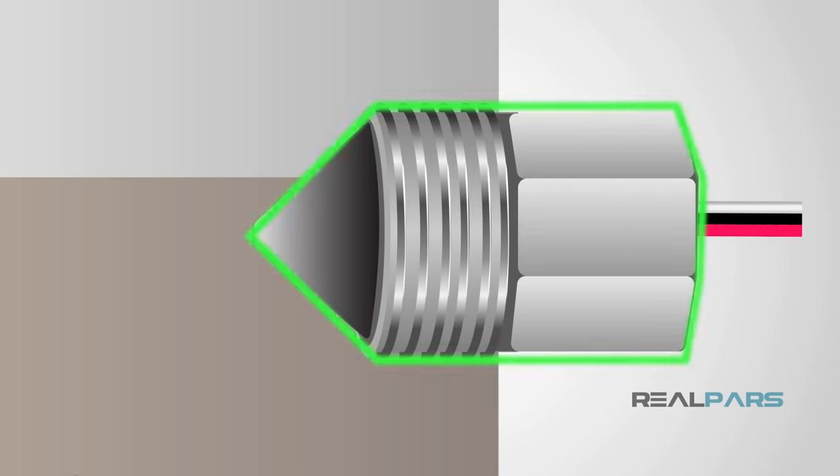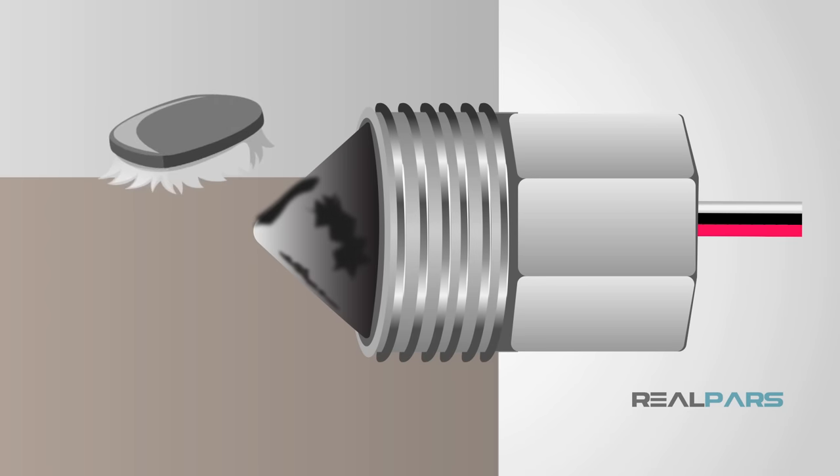These sensors have no moving parts. They are not affected by high pressure or temperature, are small in size, and can be used in liquid applications. However, if the lens gets coated or dirty, they would require cleaning.